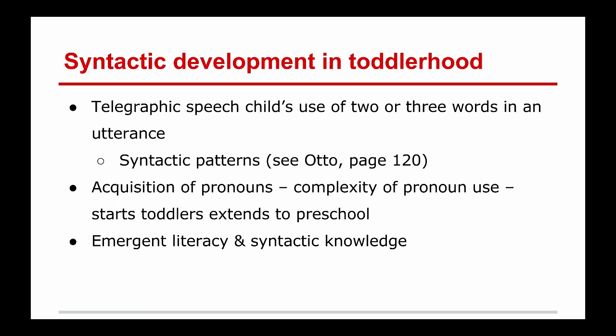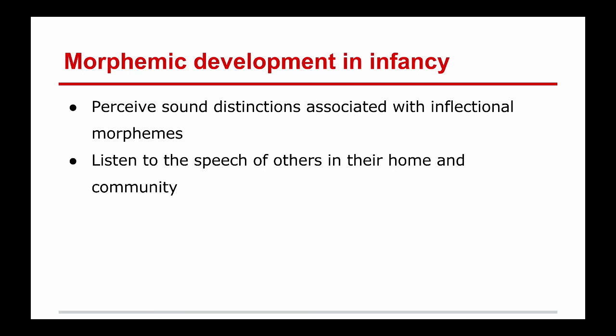In terms of morphemic development, children in infancy are paying attention to words and phonemes. They're also starting to perceive distinctions with sounds and thinking about inflectional morphemes — how those impact the words they use and the way they use them. A key component is also listening to the way others speak in their home and community. Even at an early age, children are listening, paying attention, and trying to understand differences between component parts of language and how to formulate them.